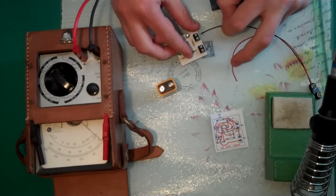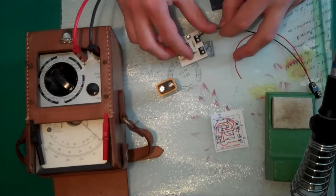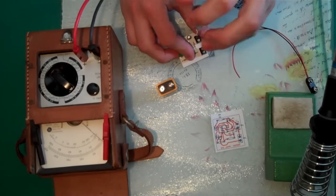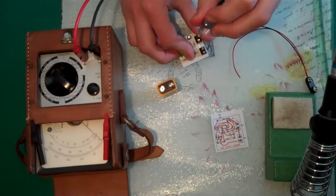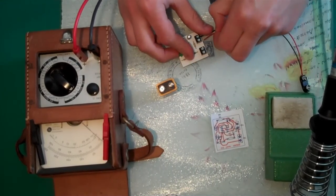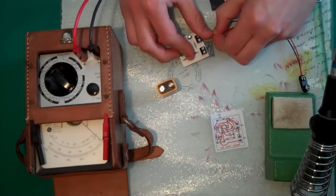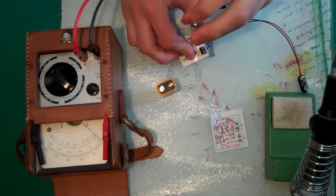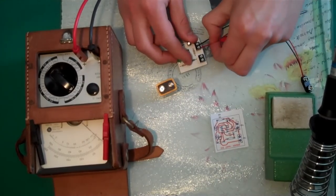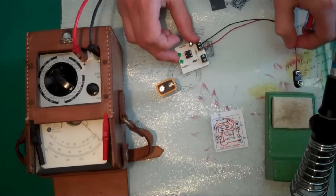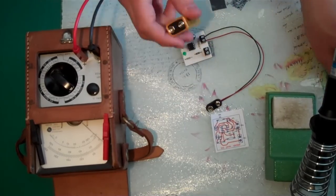And again, checking that we connect the black one to where it says minus on the diagram, and the red one to where it says plus on the diagram. Again, check that the leads don't pull out. And we can connect the battery again.